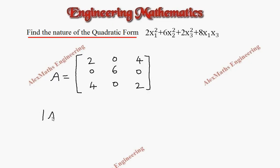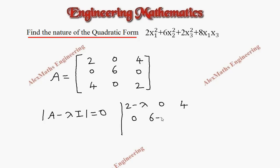From this matrix we are going to find the eigenvalues by writing the characteristic equation: determinant of (A minus lambda I) equal to 0. This gives us the 3x3 determinant with entries 2 minus lambda, 0, 4 in the first row; 0, 6 minus lambda, 0 in the second row; and 4, 0, 2 minus lambda in the third row.